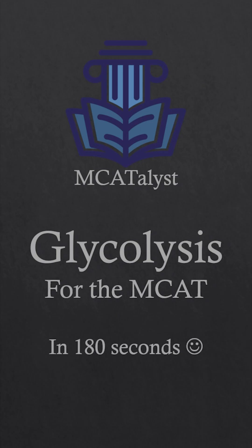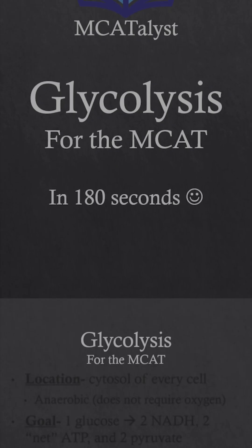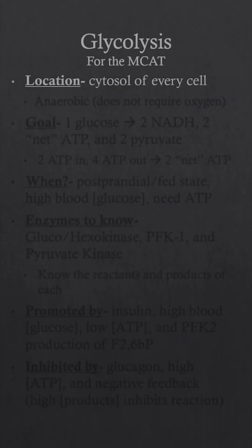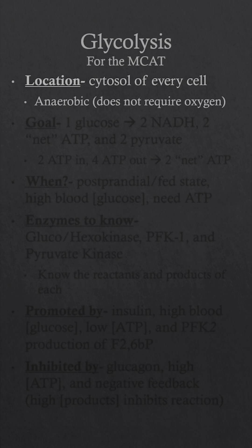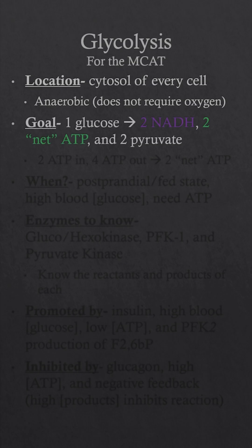Glycolysis for the MCAT in 180 seconds. Glycolysis takes place in the cytosol or cytoplasm of every single cell, making it an anaerobic process that does not require any oxygen. The goal of glycolysis is to take one glucose and produce two NADH, two net ATP, and two pyruvate.